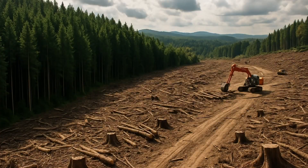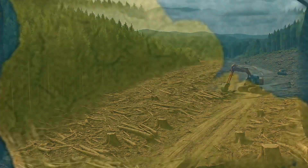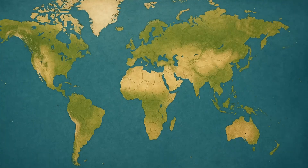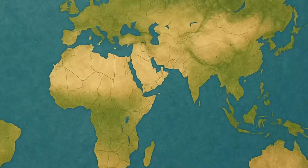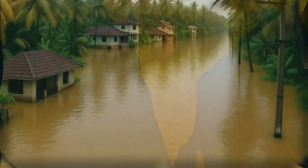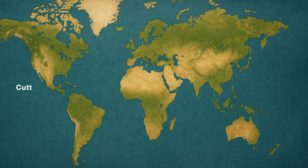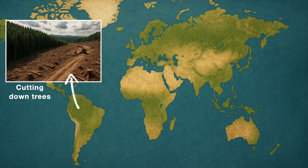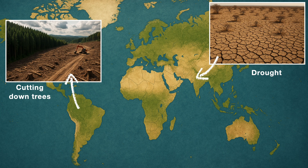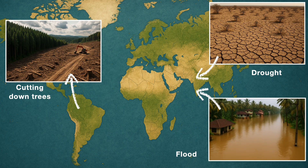Did you know that cutting down trees in one part of the world could lead to drought somewhere else, or flood in some other part of the world? Sounds strange, right? But it's true. Cutting down trees in, for example, the Amazon forests can lead to drought in northern parts of India and flood in the southern part of the region.